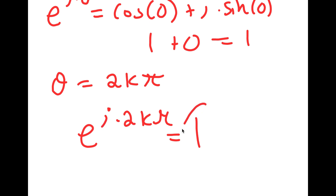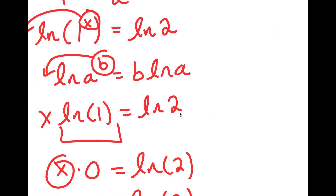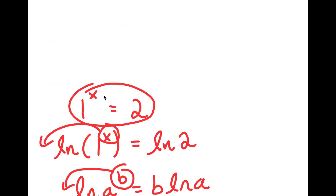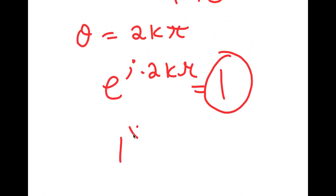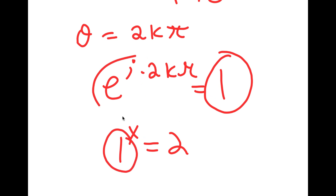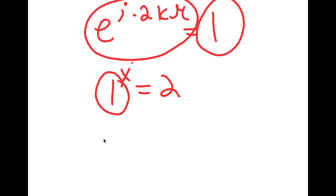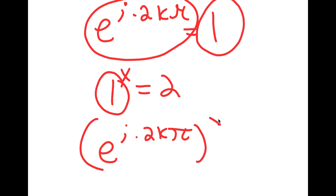So now we know that e to the power of i times 2k pi is equal to 1. And remember, our original equation was 1 to the power of x equals 2. So what I'm going to do is substitute 1 with e to the power of i times 2k pi. So now I get e to the power of i times 2k pi, to the power of x, is equal to 2.